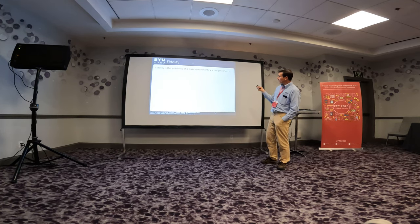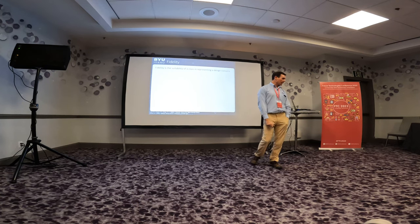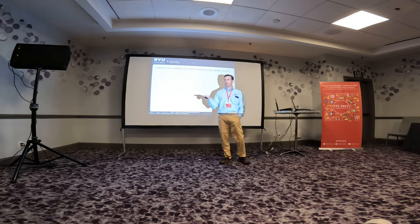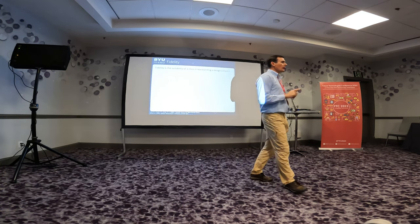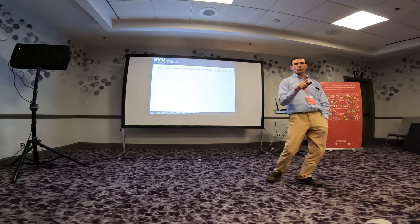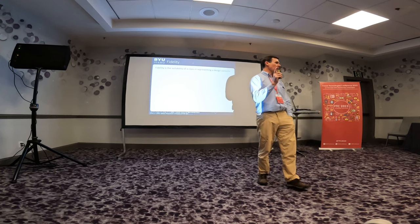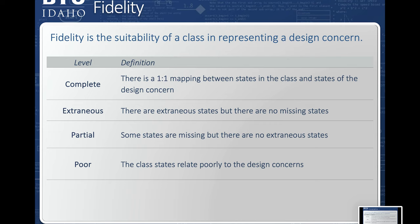The next metric is fidelity — the suitability of a class in representing a design concern. This is very similar to cohesion for functions: for a function, cohesion means it does one thing and one thing only, but for a class, it needs to represent one thing and one thing only. It's about the nouns, not the verbs. We have levels of quality: complete means there's a one-to-one mapping between the design concern and my attribute selection, versus poor, which means I've done a poor job of it.